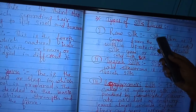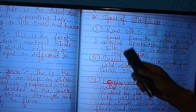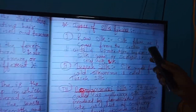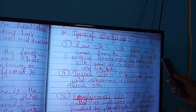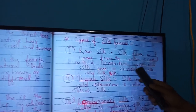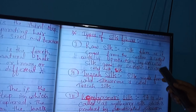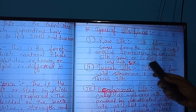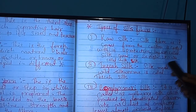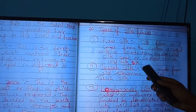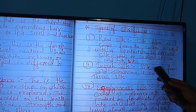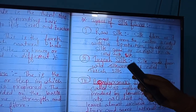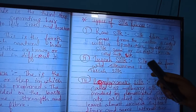Types of silk fibers. First: raw silk. Silk fiber as it comes from the cocoon is coated with a protective layer called silk gum or sericin. It is also called milled silk.